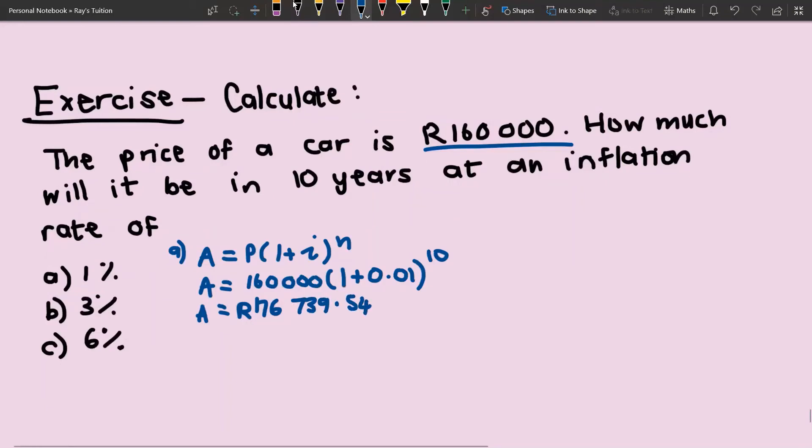Let's calculate the second one, number b. For number b, everything is the same, it's just that the inflation rate is different. Now it's 3%, so 1.03 to the power of 10. When we calculate that, what we get is R215,026.62. You can already see that if you have a 1% inflation rate compared to 3%, it makes quite a big difference.